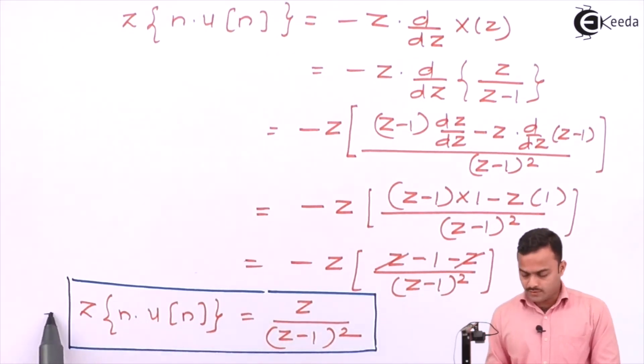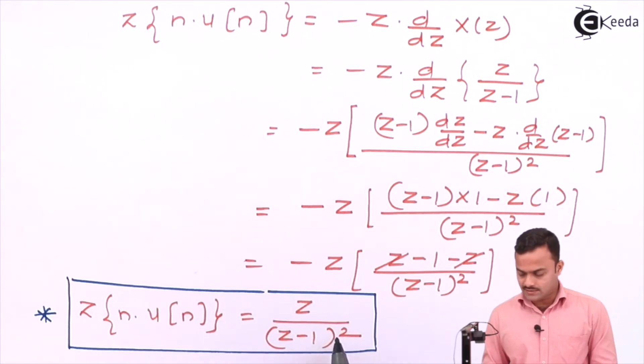This is very important because sometimes while calculating the inverse Z transform, we come across a simple pole repeated twice. At that time it should strike us that the signal must be multiplied with n, or maybe higher orders of n. Thank you.